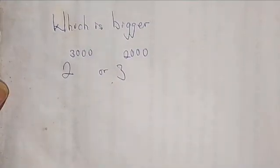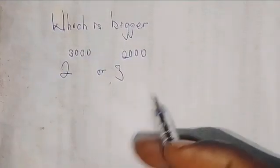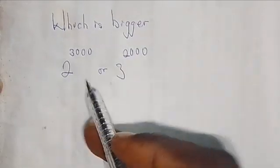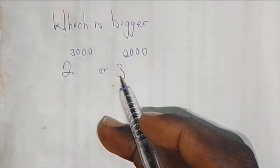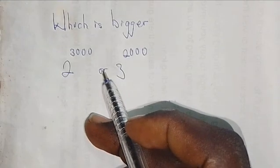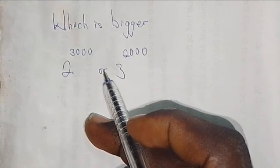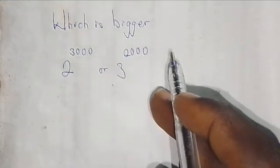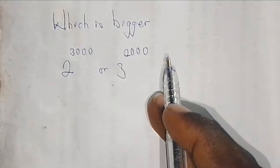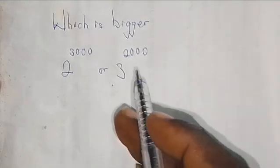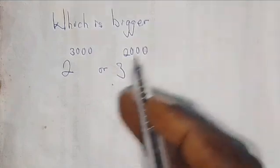Welcome to today's math class. Looking at this question: which of these two numbers is bigger, 2^3000 or 3^2000? If you put this in your calculator, these are very large numbers. We are going to prove it with simplicity.